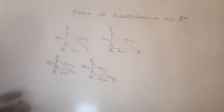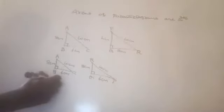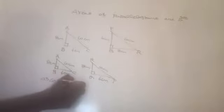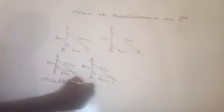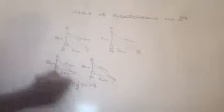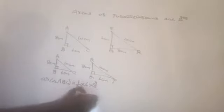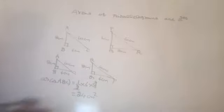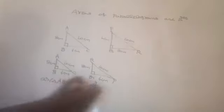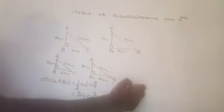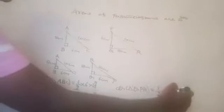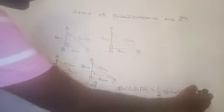The area of triangle ABC is half into base into height, which is half into 6 centimetres into 8 centimetres. Similarly, the area of triangle QPR is half into base QP, which is 6, into height 8 centimetres. Both give 24 centimetre square.